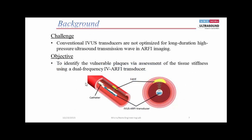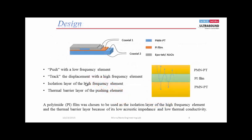Conventional IVUS uses arrays at about 20 MHz, or single elements at 40, 45, 50, up to 60 MHz. That high frequency might not be very efficient for ARPA, which requires pushing and tracking. So we look at those requirements to determine what kind of IVUS transducer we can make. Similar to Dr. Ma's presentation, we want a dual-frequency design: low frequency as a pushing transducer, and high frequency at the front as the tracking transducer. This is similar to our acoustic angiography or superharmonic imaging design, with a high-frequency tracking layer, an isolation layer in between, and the low-frequency pushing transducer at the bottom.